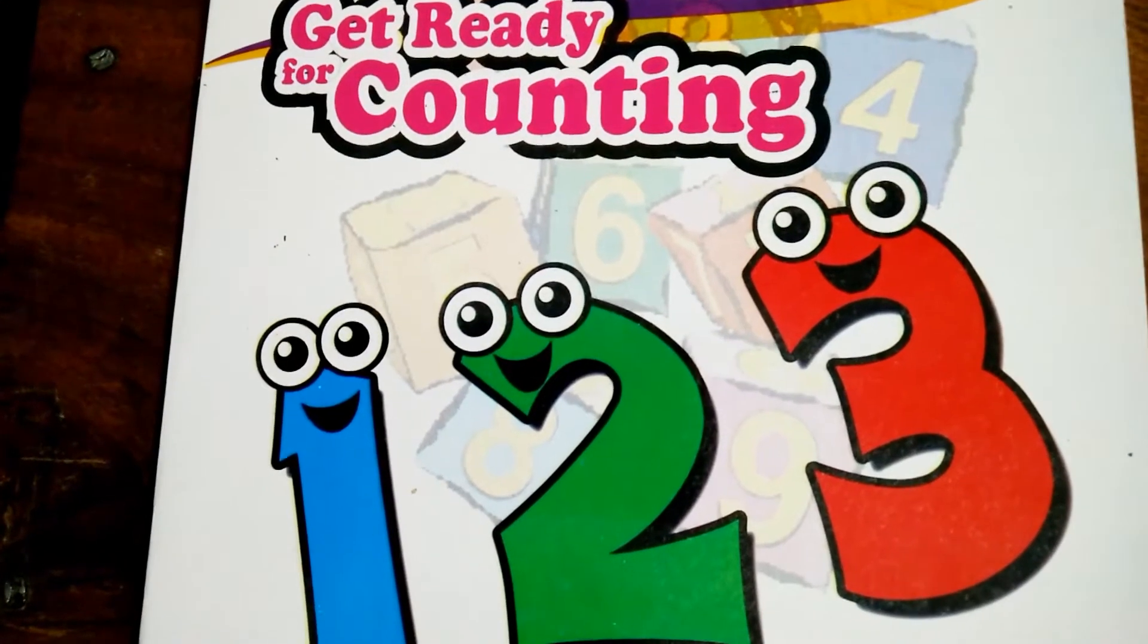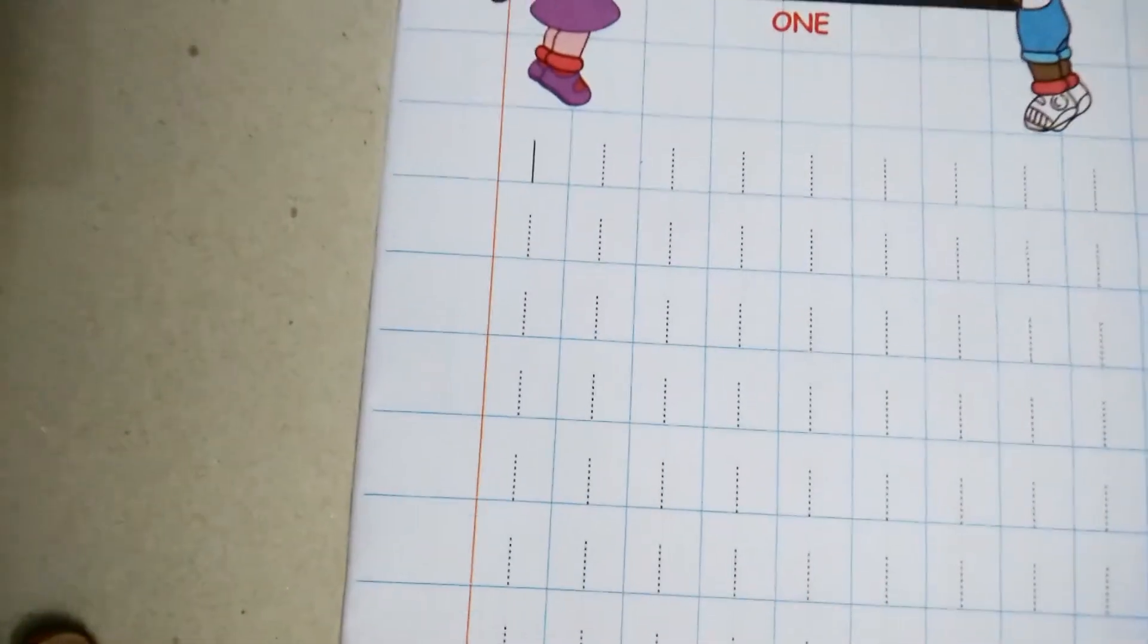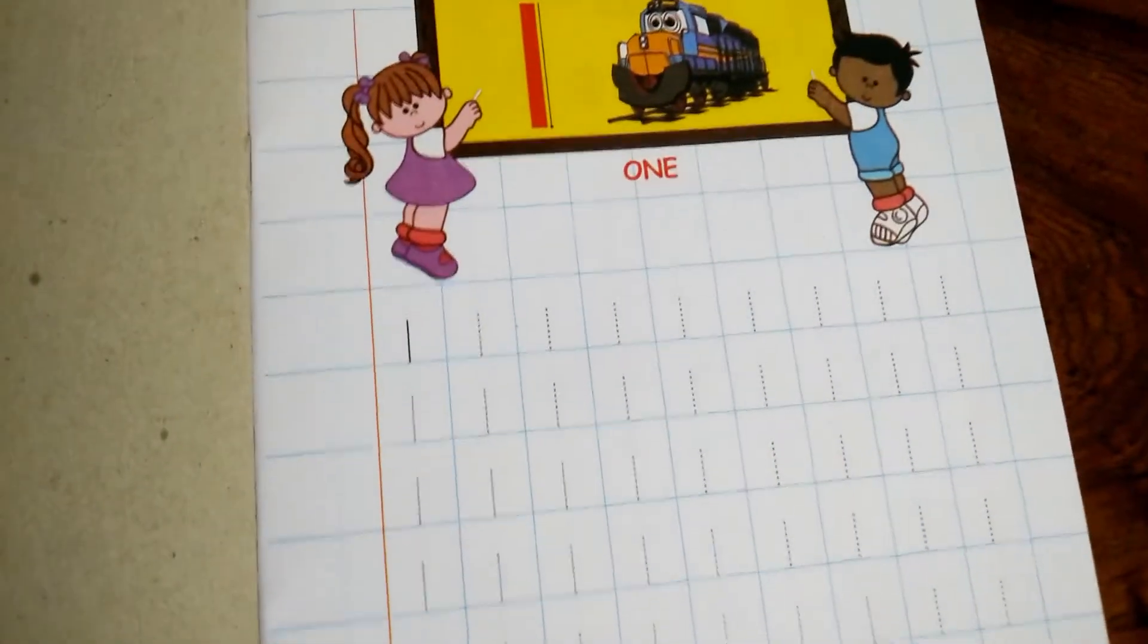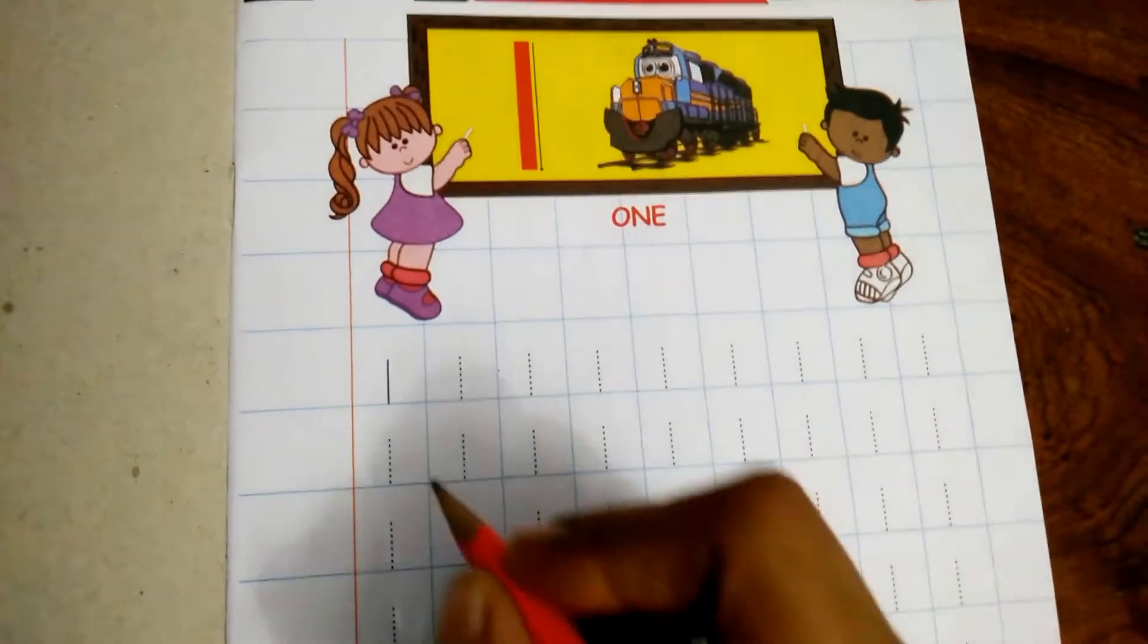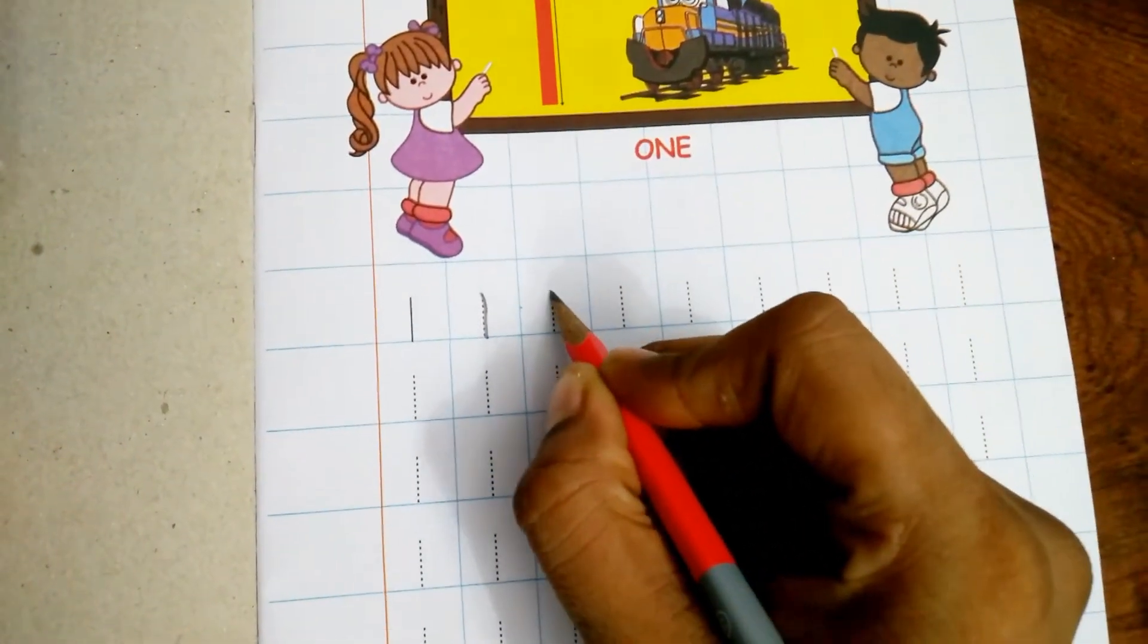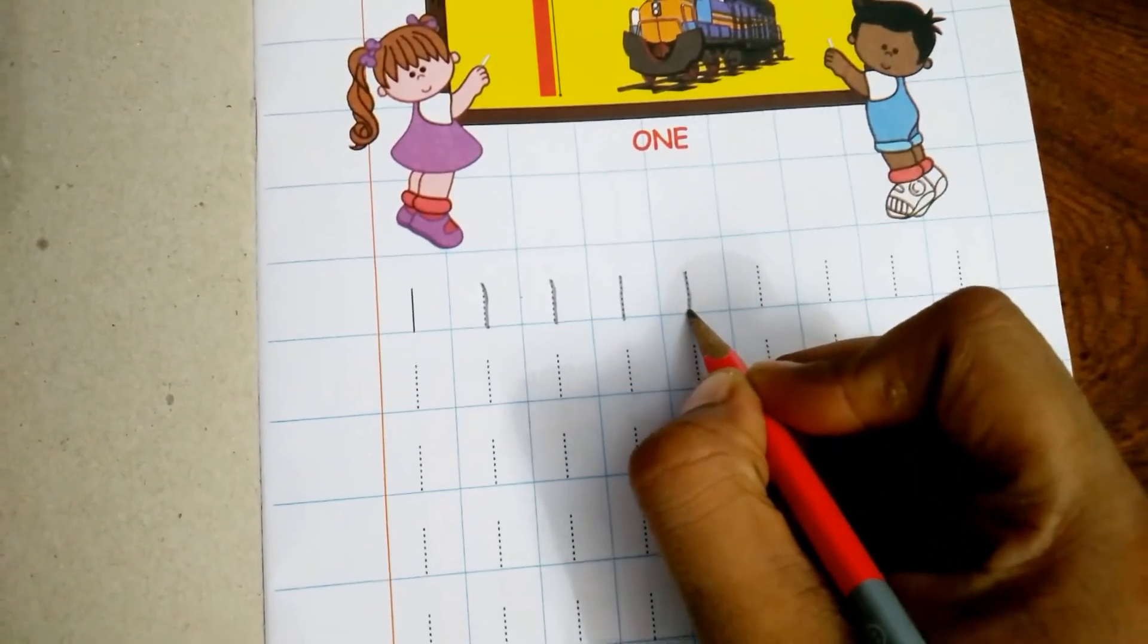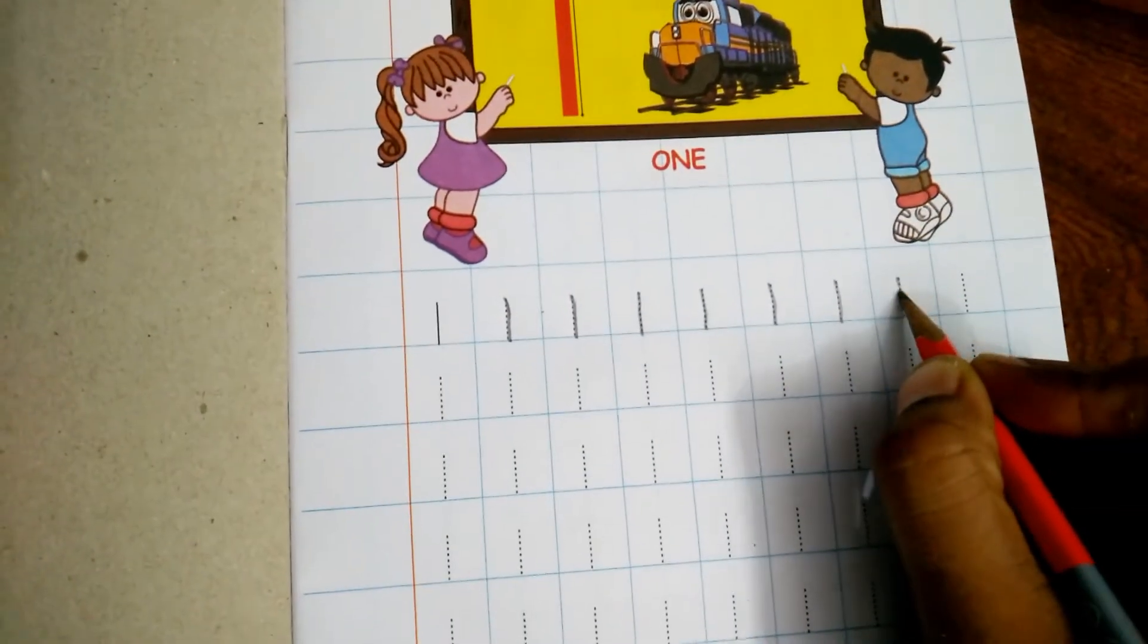You have math activity notebook with you. Start 1 tracing in your activity notebook. Start with your pencil tracing the line. 1, 1, 1, 1. This is 1. Trace the line.